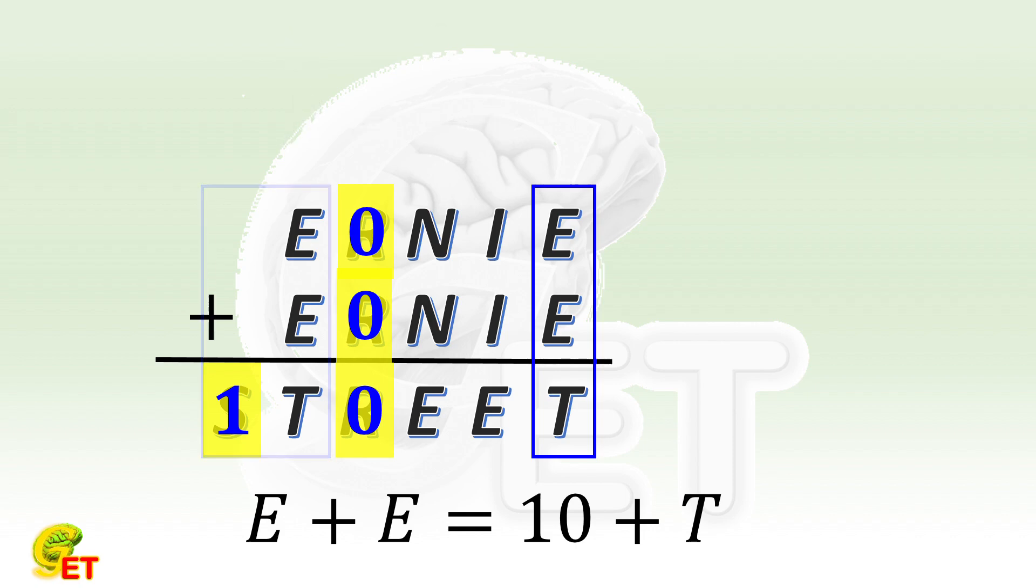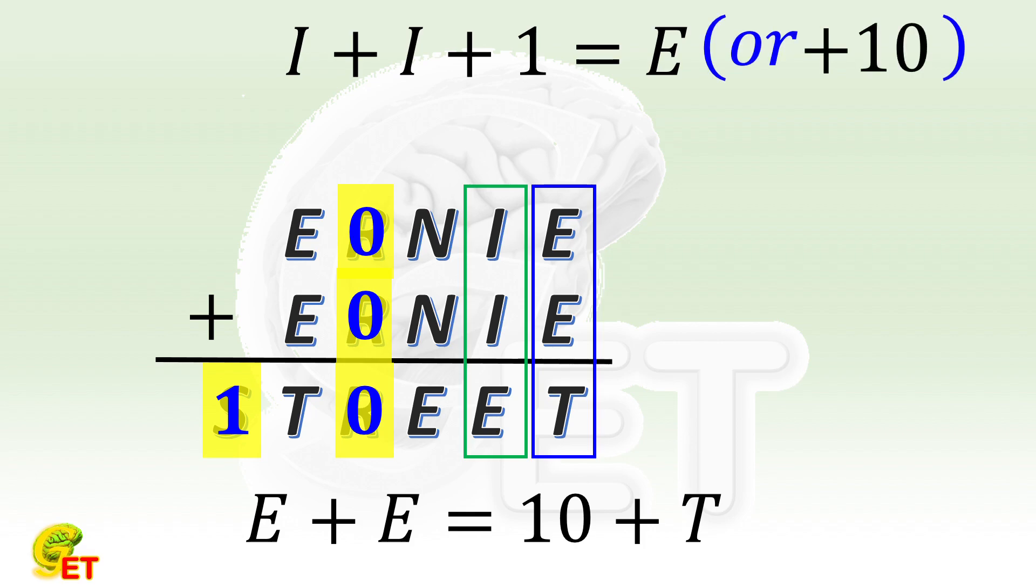Let's go back to the last place. Please don't forget that there is a carry here. So regarding its previous place, we add up 2I and 1. The one's digit of their result is E, which means the result is either equal to E or E plus 10. And E must be odd.